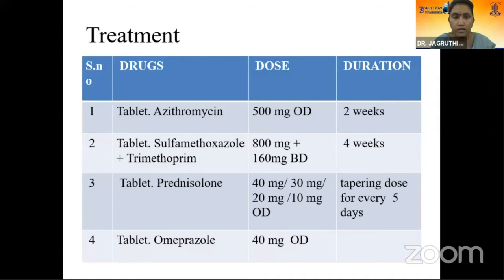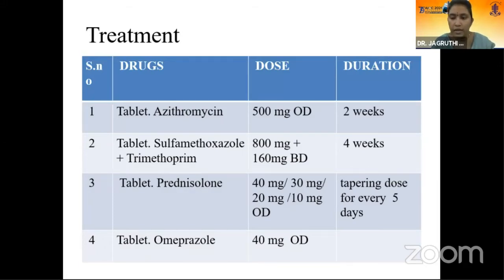Treatment given: oral antibiotics were started 24 hours prior to steroids. Tablet azithromycin 500 mg once daily for 2 weeks, and tablet sulfamethoxazole plus trimethoprim in a combination dose of 800 plus 160 mg twice daily for 4 weeks, and tablet prednisolone 40 mg in a tapering dose of 10 mg every 5 days until it reaches 10 mg. Tablet omeprazole 40 mg once daily was also given, and then follow-up was done.